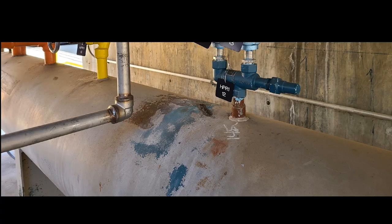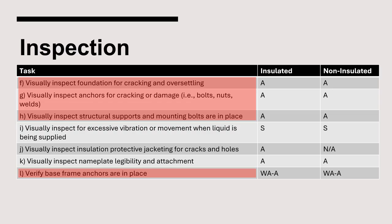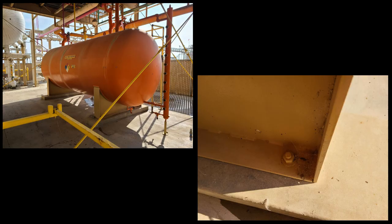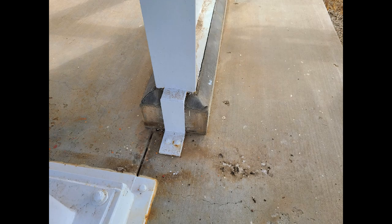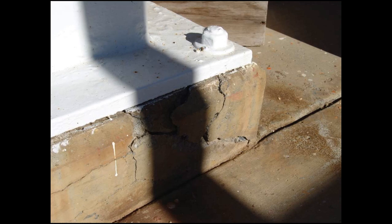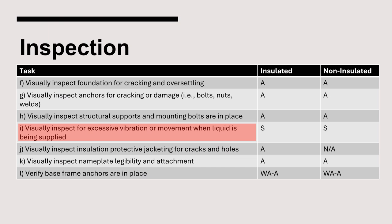Here is an example of minor paint degradation. The next set of requirements pertain to the vessel foundation, anchorage, and supports. Typically, high pressure receivers are ground-mounted with anchor bolts embedded into the concrete foundation; special attention should be made to ensure the foundation is not cracking. IIAR 6 also requires semi-annual inspection of the vessel for excessive vibration or movement when liquid is being supplied to the vessel. This requirement is most relevant to surge drums that receive liquid through a solenoid valve; for HPRs, the high pressure liquid supplied by the condenser should not be a cause of any vibration.